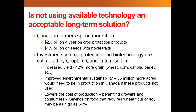We want to balance and not eliminate that risk outright. Not using the newest crop protection technologies is not an option or a long-term solution. We want to balance the trade risks arising from the factors that Gord discussed with the importance of these crop protection technologies to growers. Estimates from CropLife Canada show that investment in crop protection products and biotech can result in an estimated increased yield of 42% more grain as a whole — wheat, corn, canola, barley, etc.